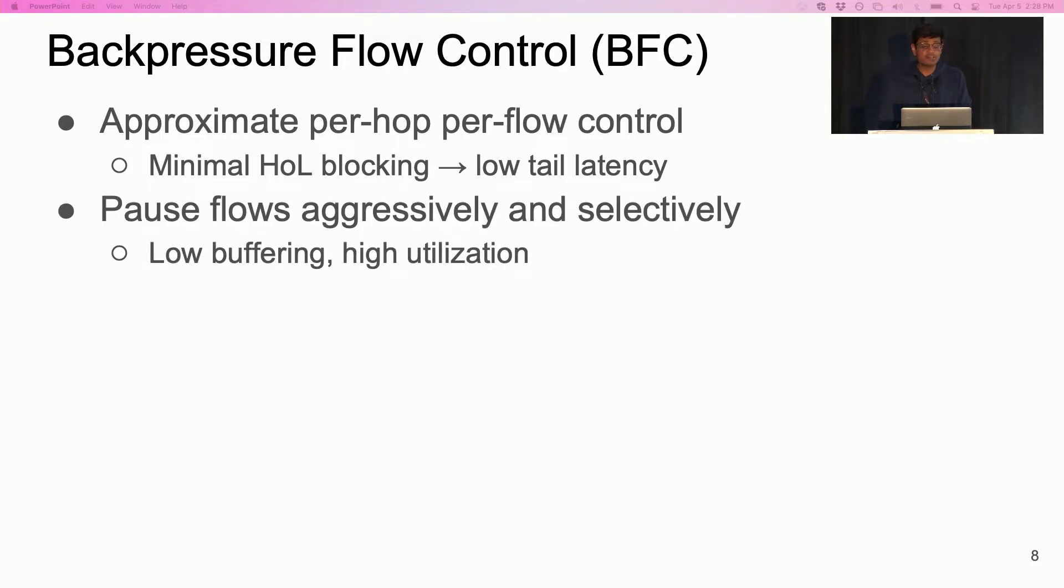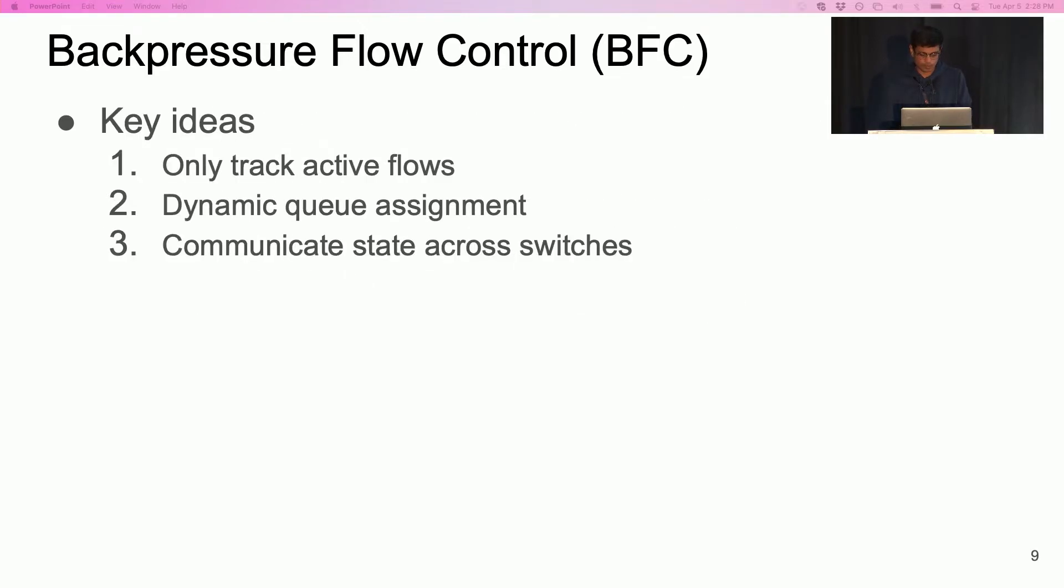To control buffers, a BFC switch pauses flows causing congestion at the upstream. In BFC, the threshold for pausing is set aggressively low to minimize buffering. We can do so because BFC only pauses congested flows selectively. Finally, BFC uses a limited amount of state and only involves simple per packet operations at the switch. BFC combines three simple ideas to achieve a practical design for per hop per flow control. I will now describe these three ideas in detail.